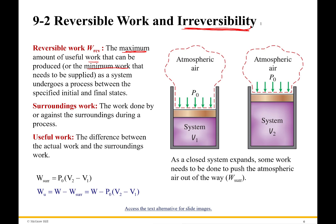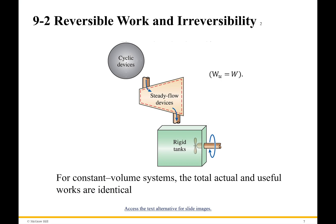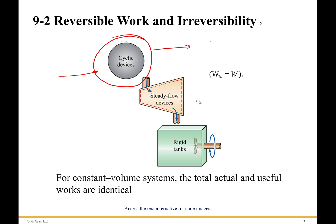So even in the best case scenario with a perfectly reversible system, I'm still going to lose this surroundings work. Are there any systems that don't have surroundings work? The answer is yes. First off, cyclic devices — your car is a cyclic device. It takes in air at one pressure and expels it at another, so those two kind of cancel out. Places where it's really clear there's no surroundings work are steady flow devices, because there's no change in volume of the system — it's always the same, so it's not pushing against the environment. And the last place is rigid tanks, because we have no change in volume whatsoever. Obviously in that case, my work output would just be equal to my useful work.